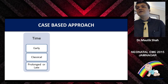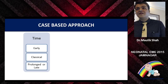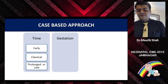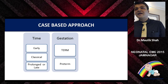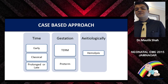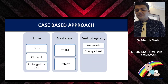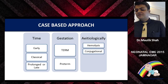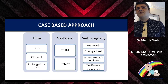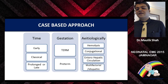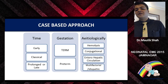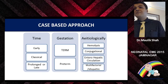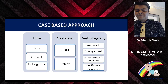First of all we look at the basis of time — whether the baby has come early within 24 hours, classical like 4 to 7 days, or late beyond 14 days. We also look in terms of gestation — term and preterm babies — and etiologically: hemolytic jaundice, conjugated jaundice, enterohepatic circulation, or whatever the cause may be.